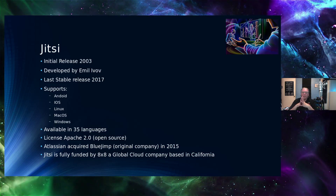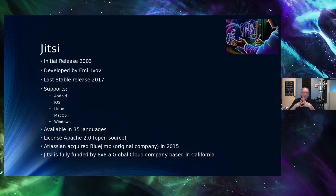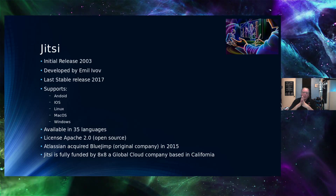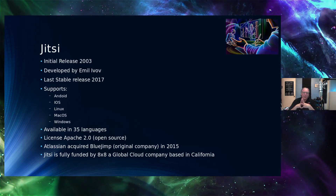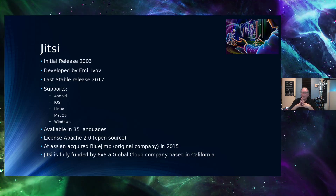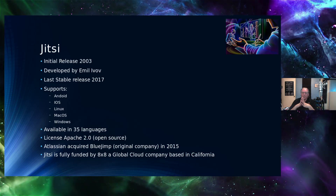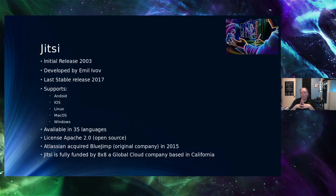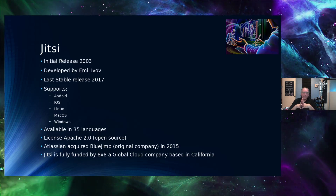Now let's talk about Jitsi. Its initial release was in 2003, so it's been around for about 17 years. It was developed by Emil Ivov. The last stable release was in 2017, but they are currently working on the next release. It supports Android, iOS, Linux, macOS, and Windows — just like Zoom — but it supports 35 languages, offering a wider base of localization. It is an Apache 2.0 license, making it open source, and the source code for Jitsi is available.